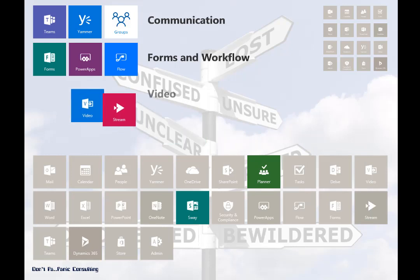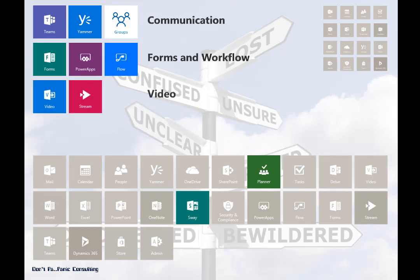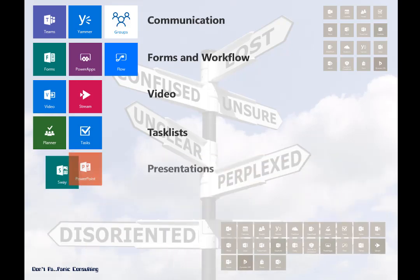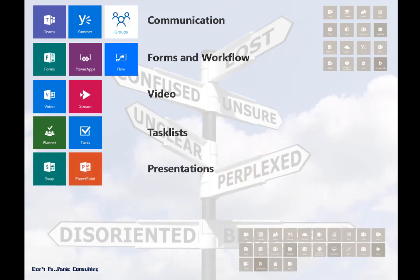And then there's Video and Stream — both of them are used to stream video, so why are there two? What's the difference? When should I use one versus the other? Then there's the Planner app that seems to be an alternative to the Tasks pane in Outlook Web Apps. And finally, we've got Sway, which seems to be another way to do presentations — but why wouldn't I just use PowerPoint?